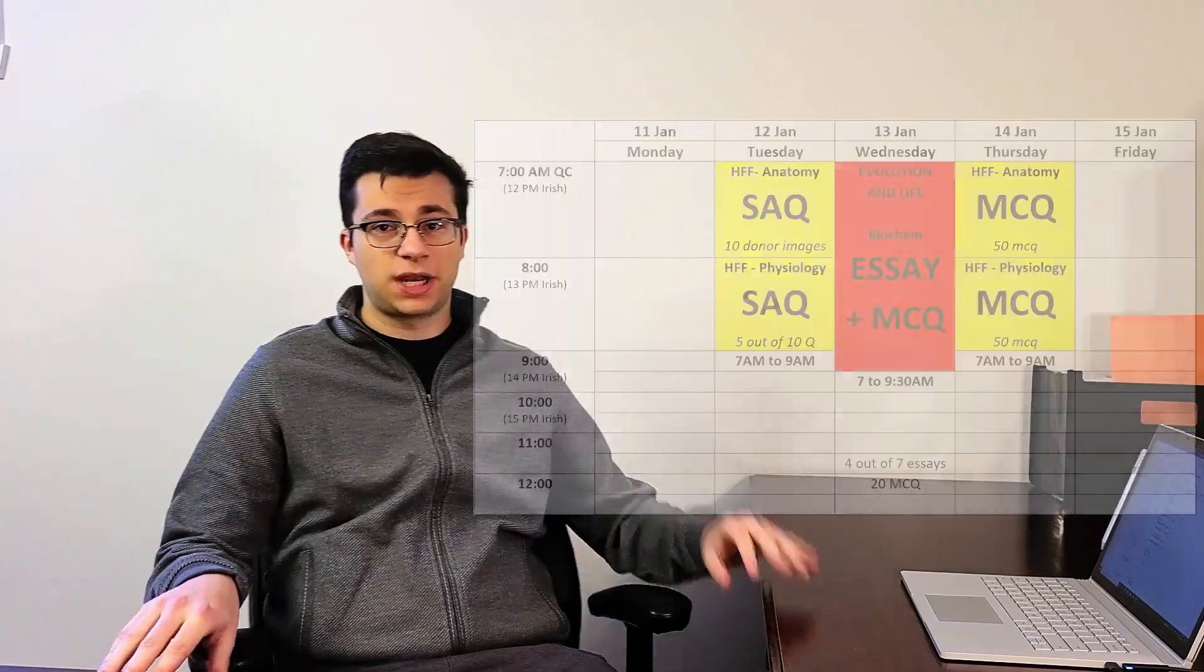Alright, so let me just talk to you very briefly about my exam structures and what exams I had to do. So if you remember from my previous videos, I have three main courses. I had anatomy, physiology, and biochemistry. However, anatomy and physiology are part of the same course, same module. It's called Human Form and Function, but we had different exams for these two courses.